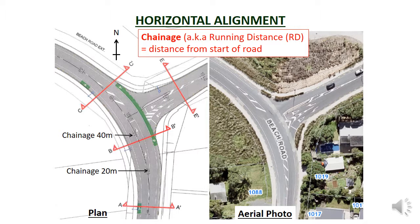Note that the second road leading off to the right of the plan also has chainage points which start from the intersection, but the chainage for that road is prefixed with 1, so each chainage point has a different value. Note also that there are red arrows with AA, BB, CC etc. on the plan. These are the locations of typical cross sections that are located on a separate drawing. The arrows indicate the direction the cross section is viewed from, so AA, BB and CC cross sections are viewed from the south of the line.